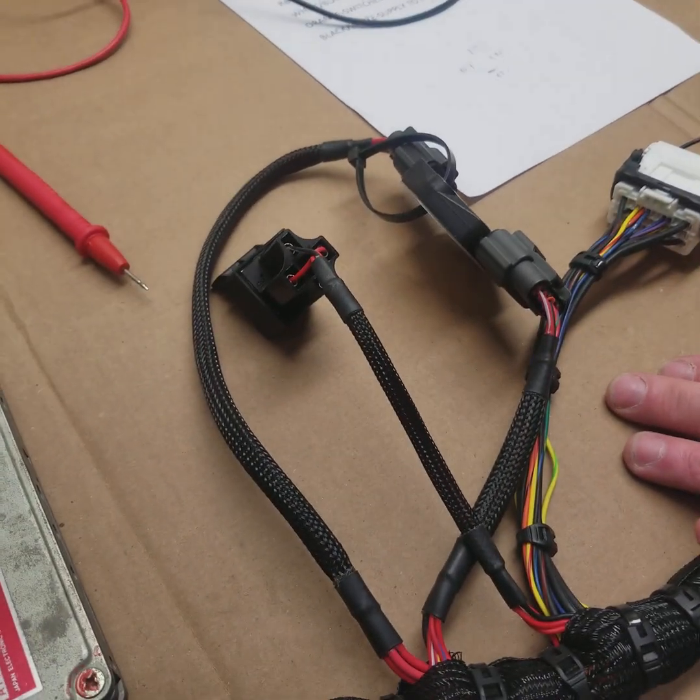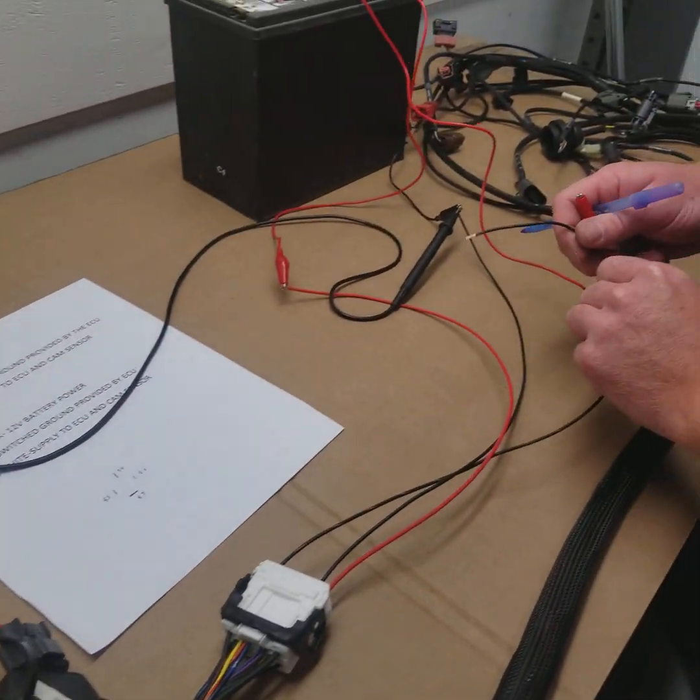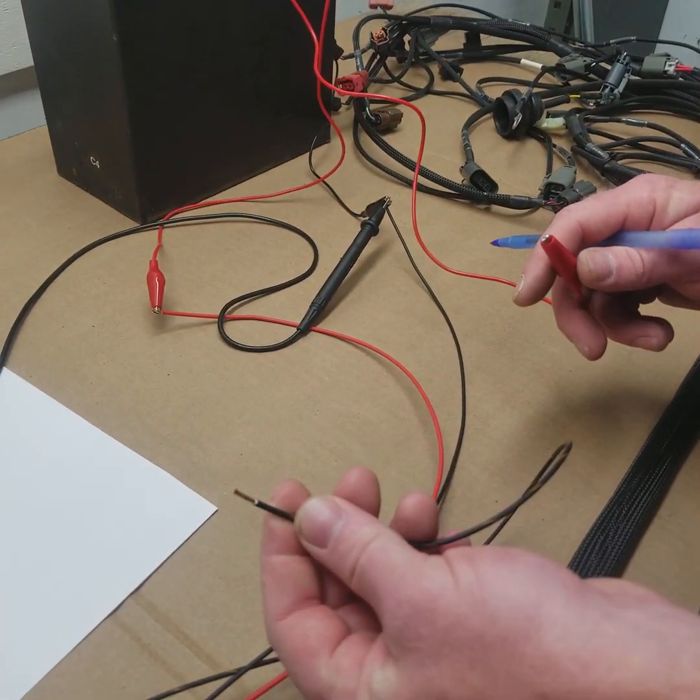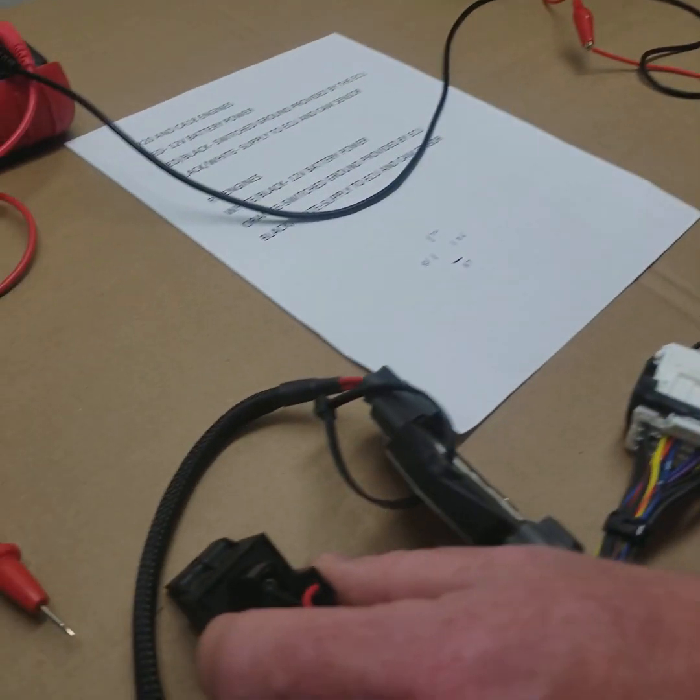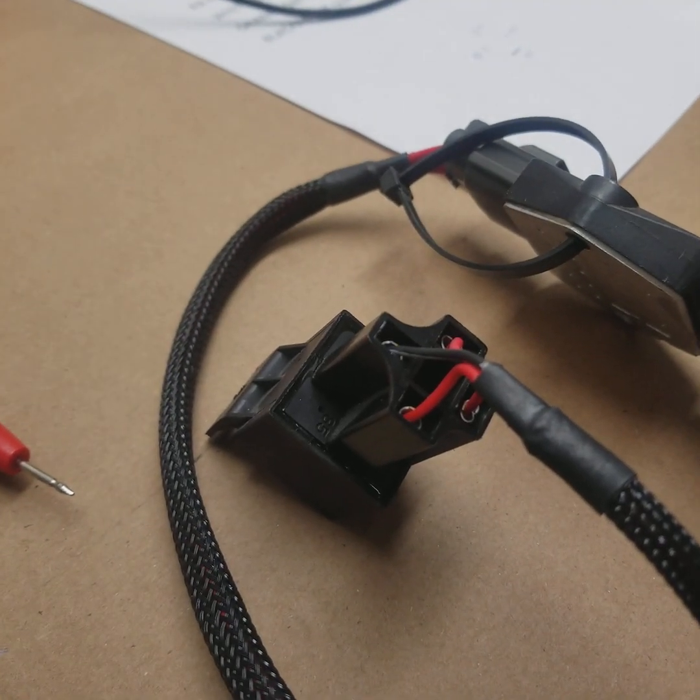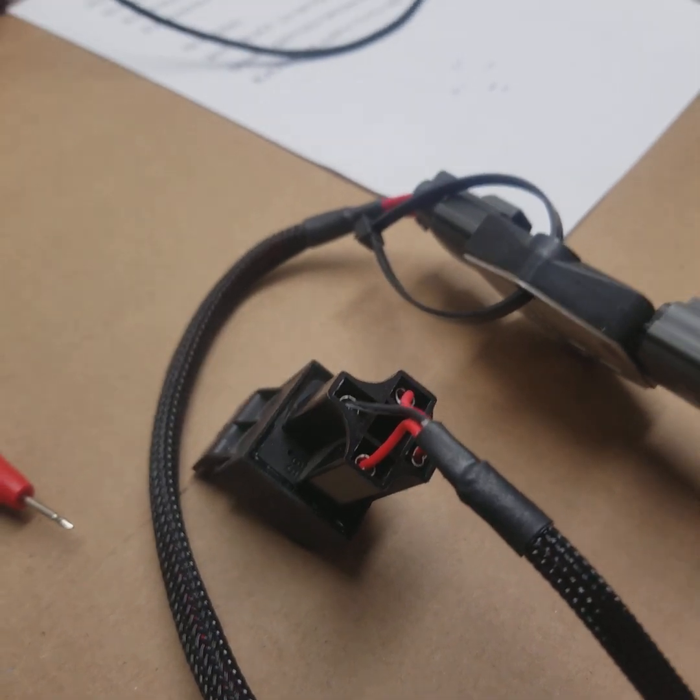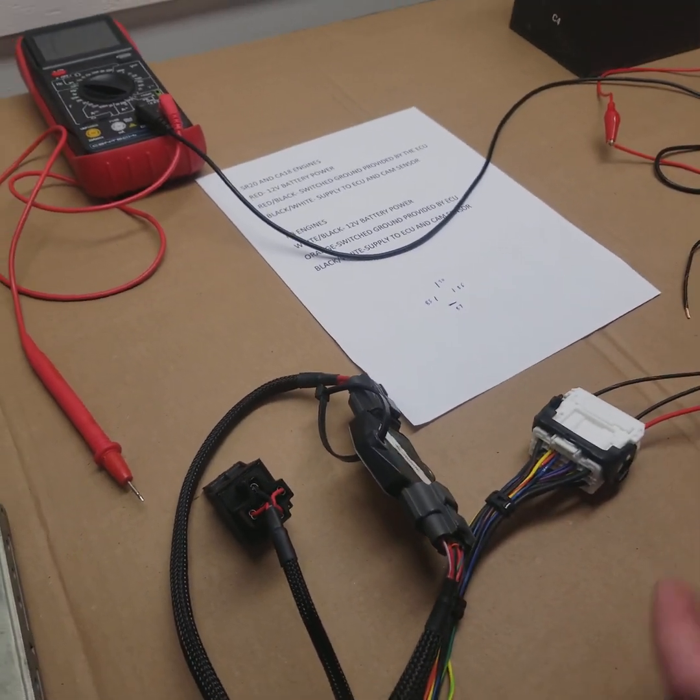So what we're going to do is this is my ignition source. This basically simulates turning the key on. So I'm going to apply power to it and you're going to hear this relay click. So that click verifies that the relay is operational.